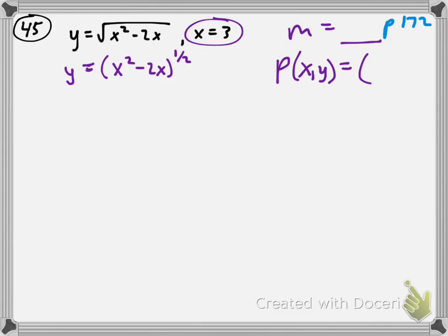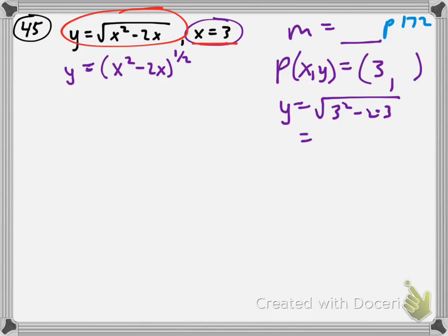We know x equals 3. To find y, we plug 3 in for x — because y is a function of x. Back in Algebra 1, you would plug 3 in for x and get y equals the square root of 9 minus 6, which is the square root of 3. So the point is (3, √3).